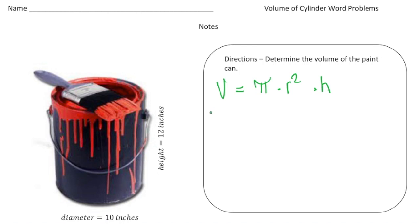So now it's just a matter of carefully plugging in what we know. We know the number pi is 3.14 times the radius—well we know the diameter is 10, so that means the radius is half that. So it's going to be times 5 squared and then times the height which is 12.